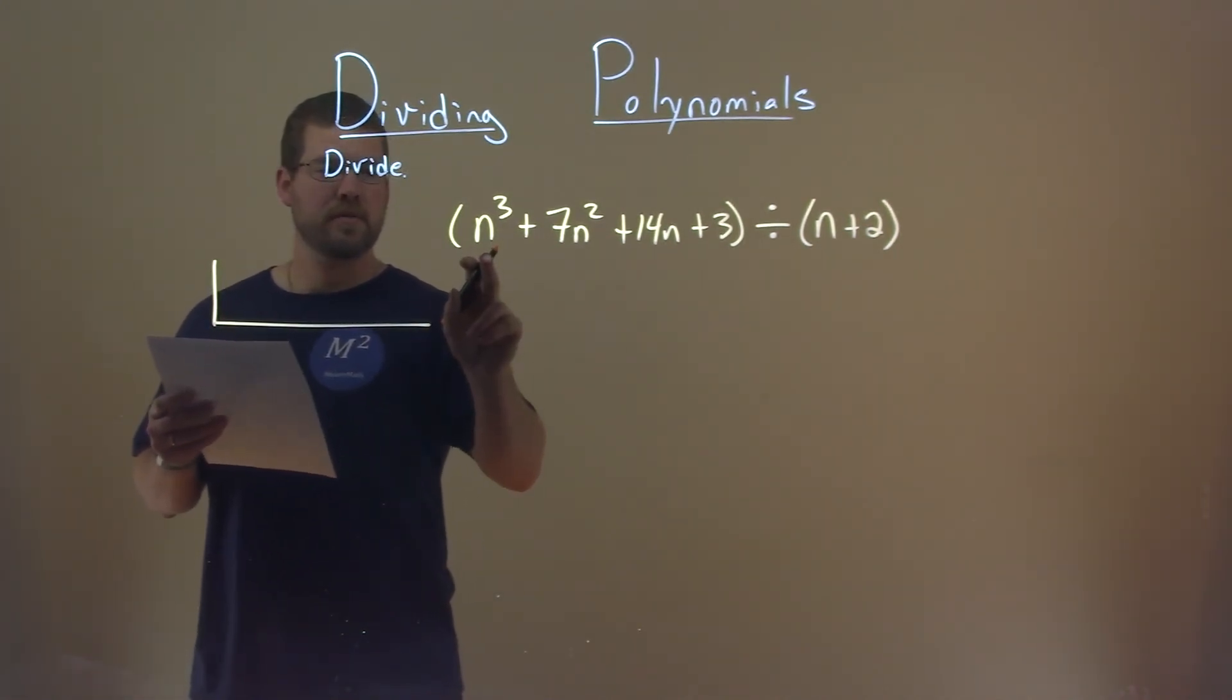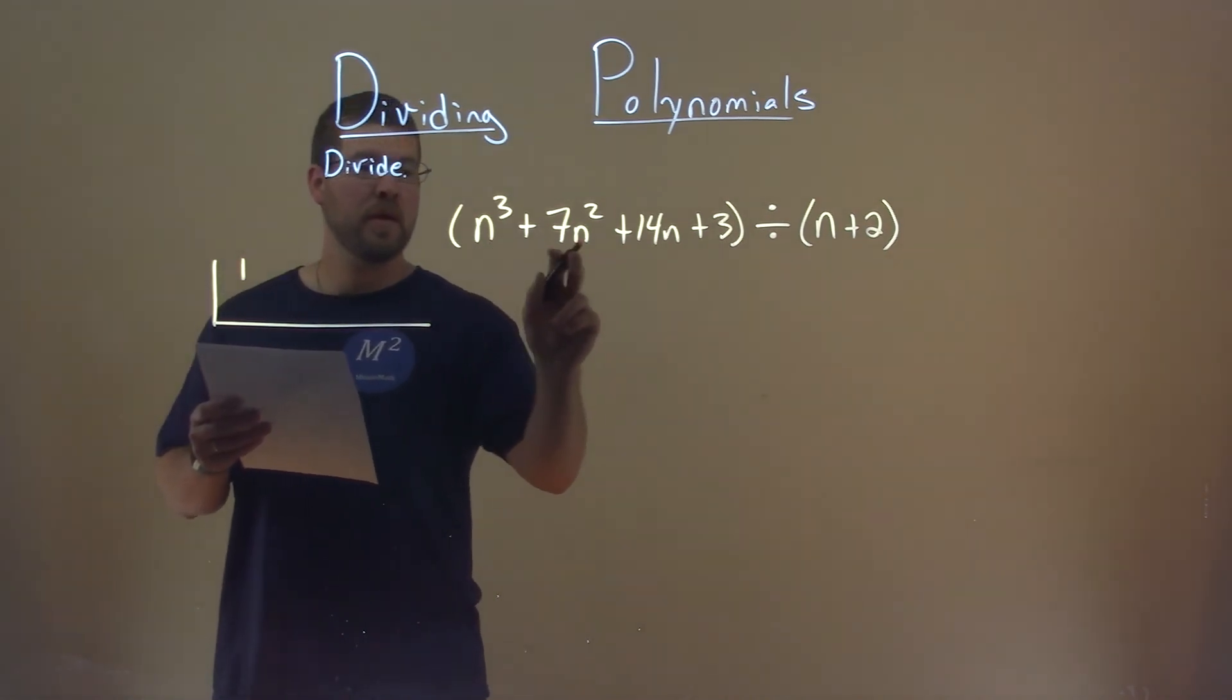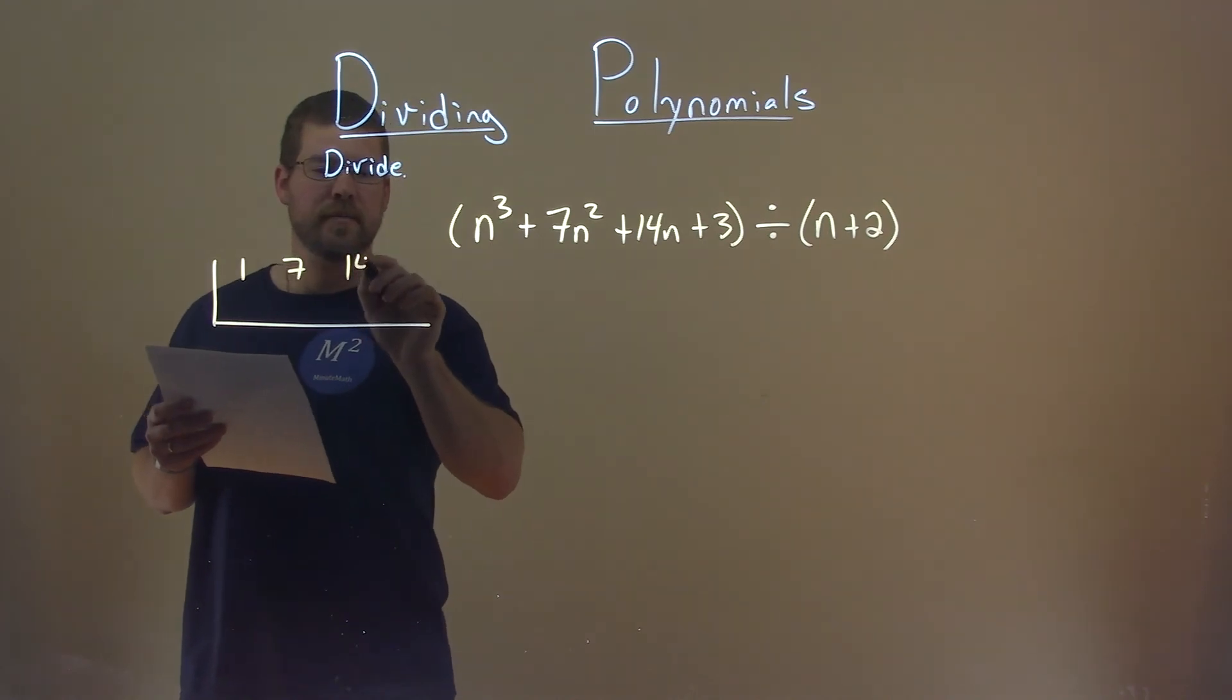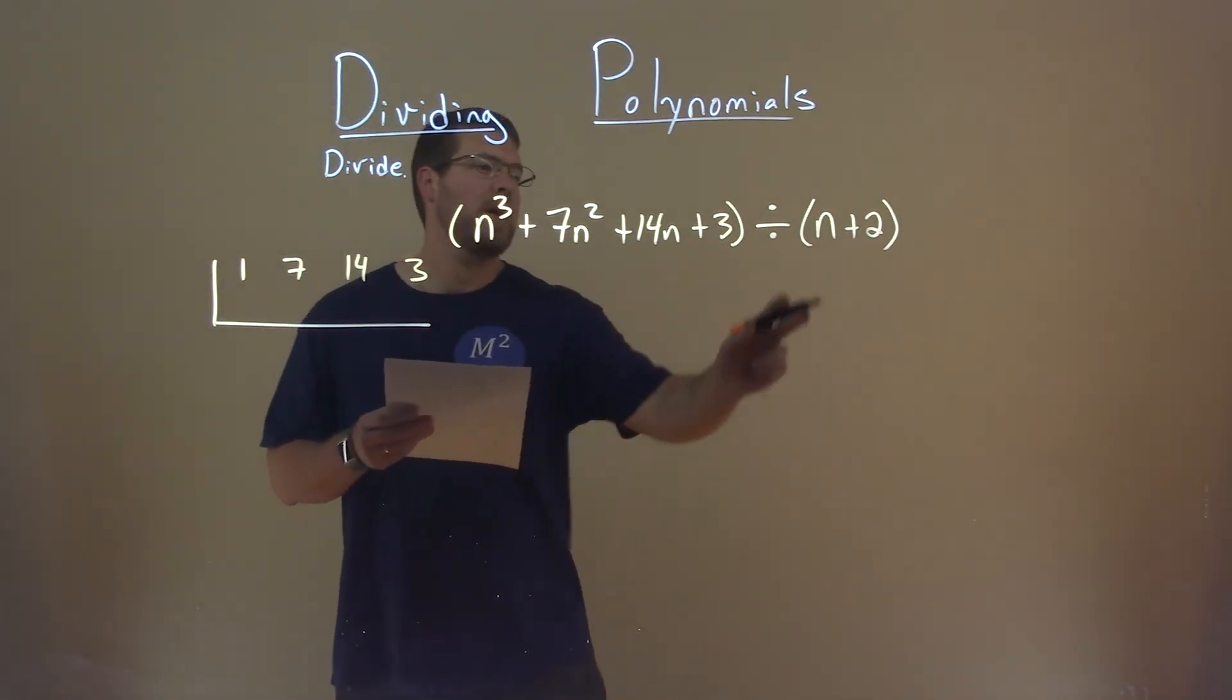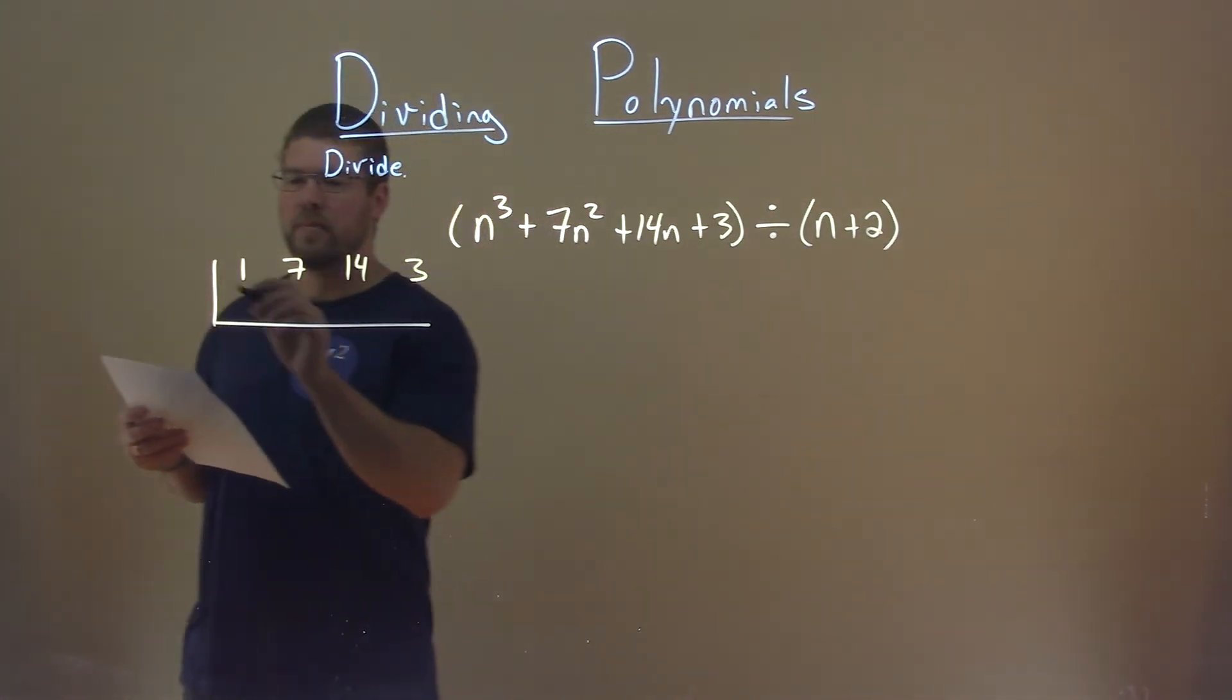We'll look at the coefficients of our first part in front of the n to the third is a 1. Then we have 7 in front of the n squared, 14 here in front of the n, and the last thing is a 3. Now we have n plus 2. Opposite of that plus 2 is a minus 2, put a minus 2 out here.